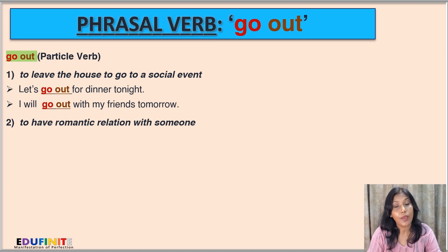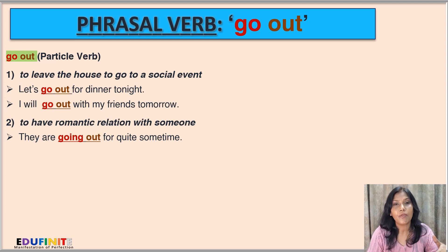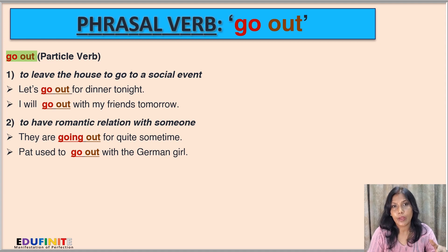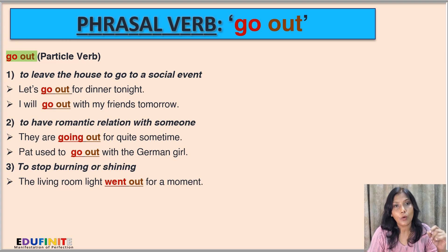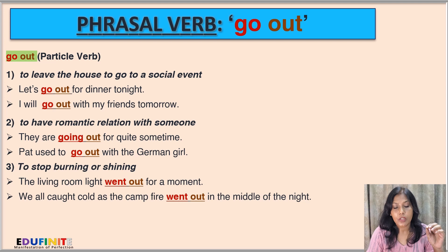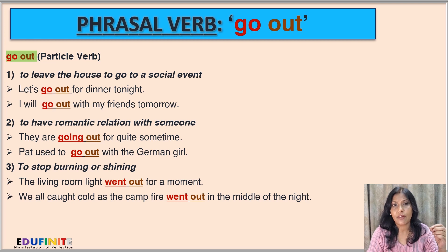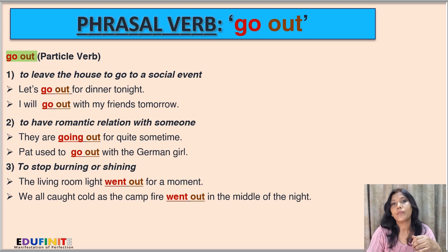The next meaning of go out is to have a romantic relationship with someone. Sentences: They are going out for quite some time — the couple has been in a relationship. Pat used to go out with a German girl. The next meaning is to stop burning or shining. Sentences: The living room light went out for a moment. We all caught cold as a campfire went out in the middle of the night — the wood finished, the campfire stopped burning, they felt cold and caught cold.